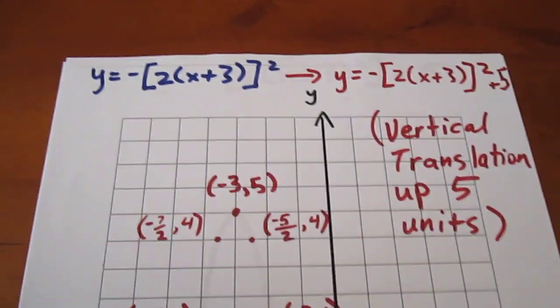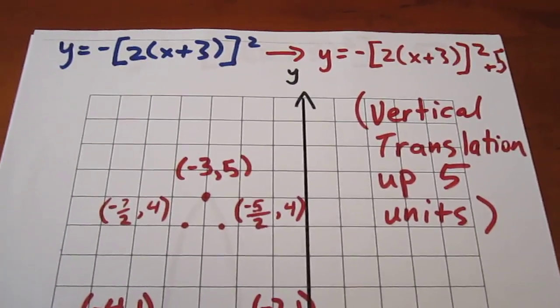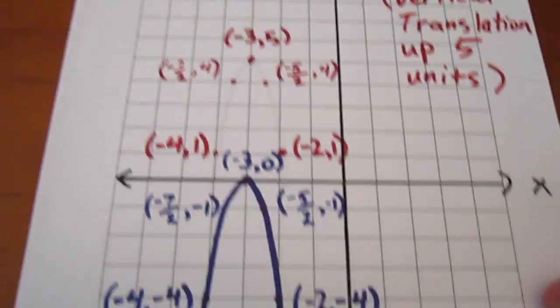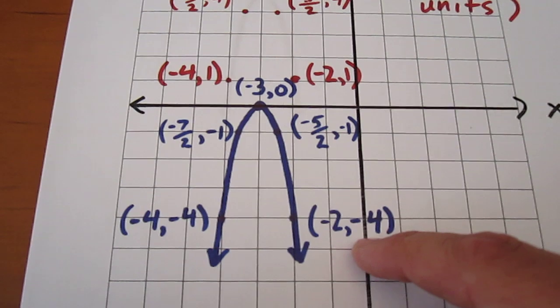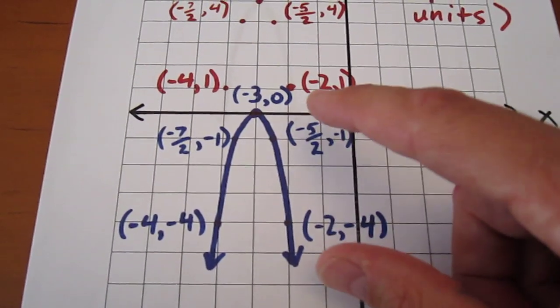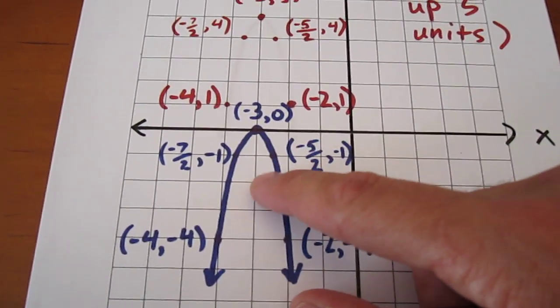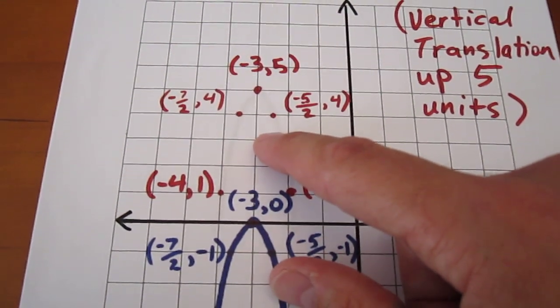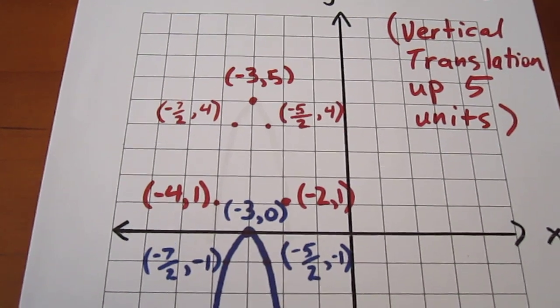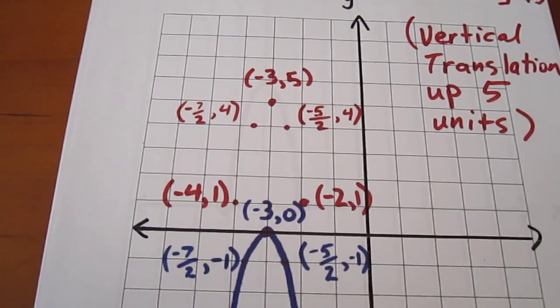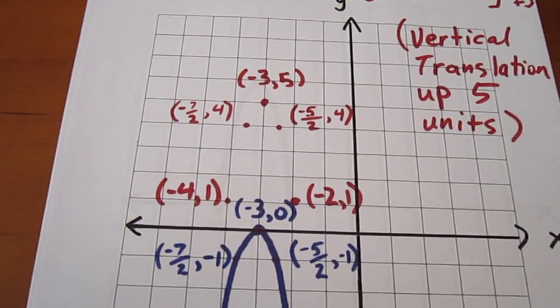Our last one is going to be to translate everything up 5 units. Well, that means we're going to take every y coordinate and add 5 to it. So negative 2, negative 4 becomes negative 2, 1. Negative 5 halves, negative 1 becomes negative 5 halves, 4. Negative 3, 0 becomes negative 3, 5. Similar thing happens on the other side of the parabola to the other branch.